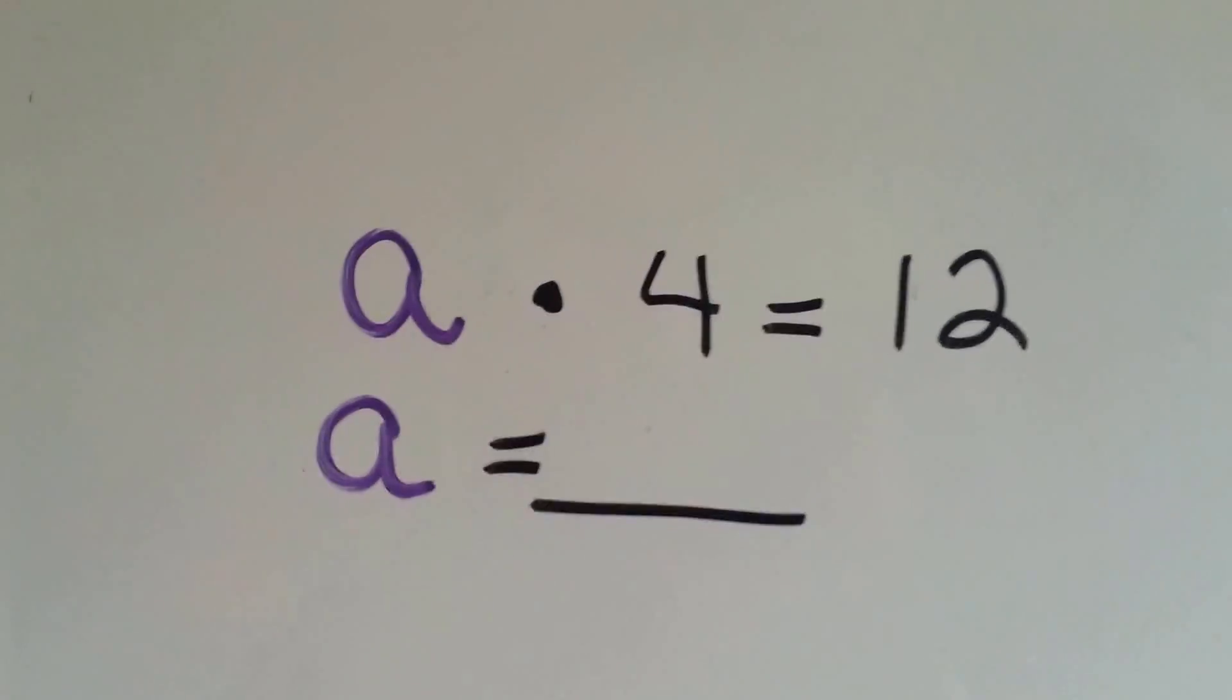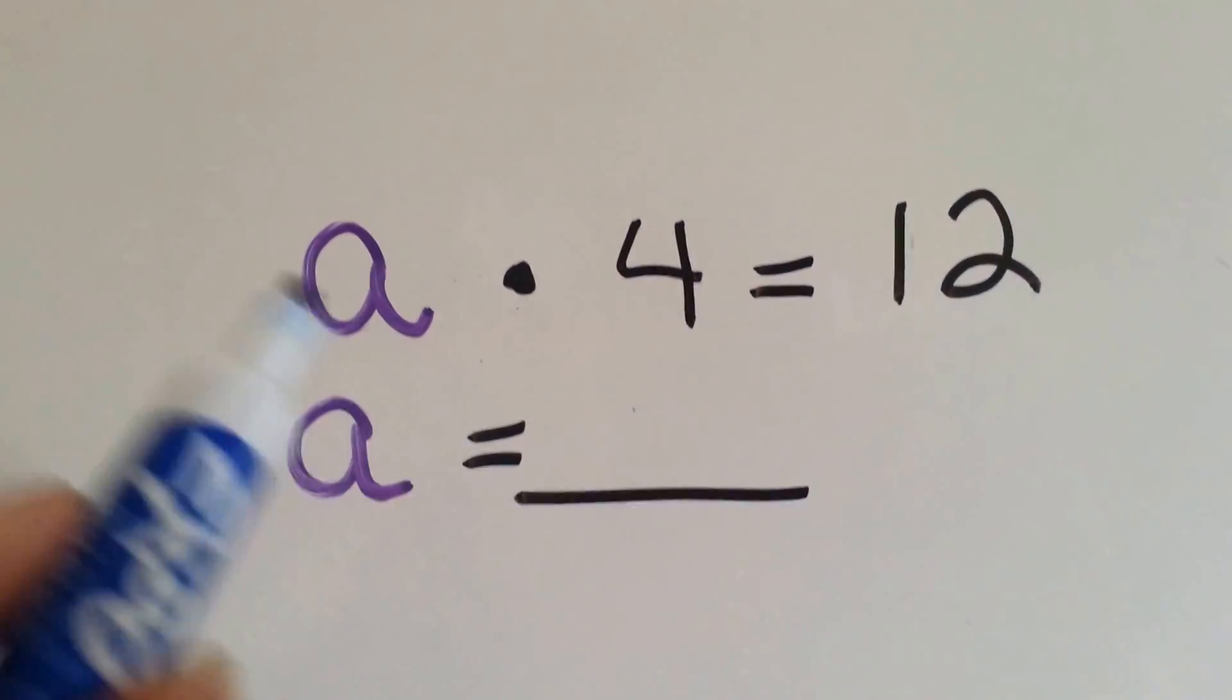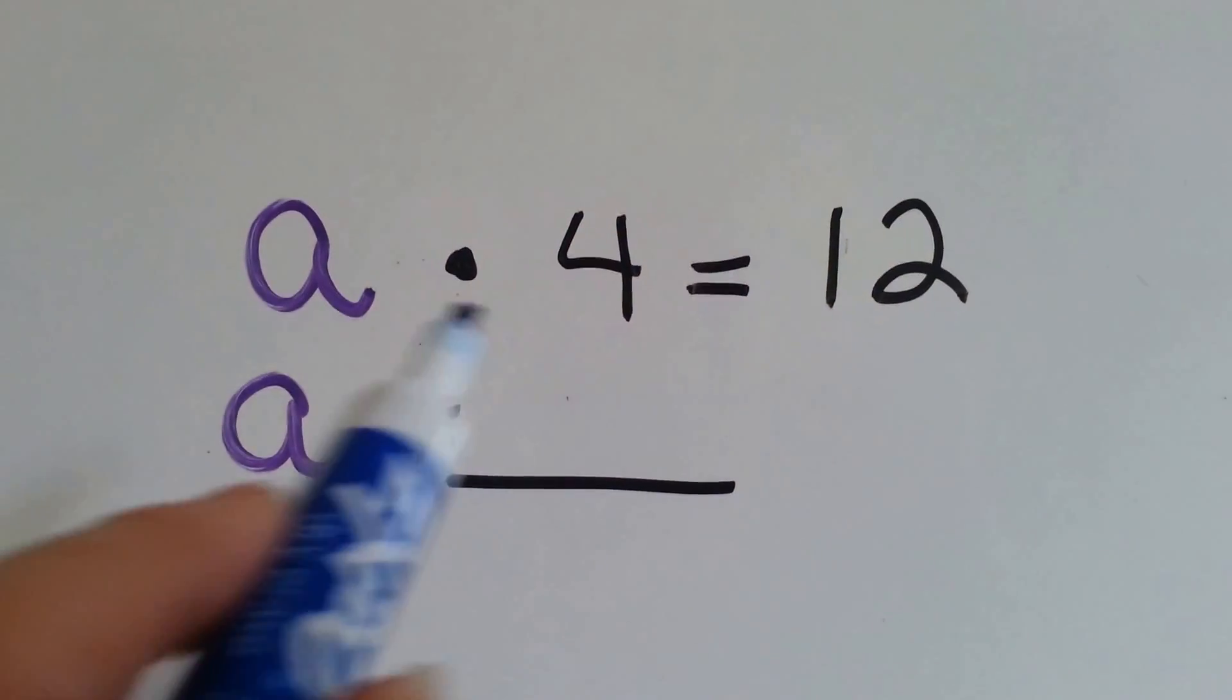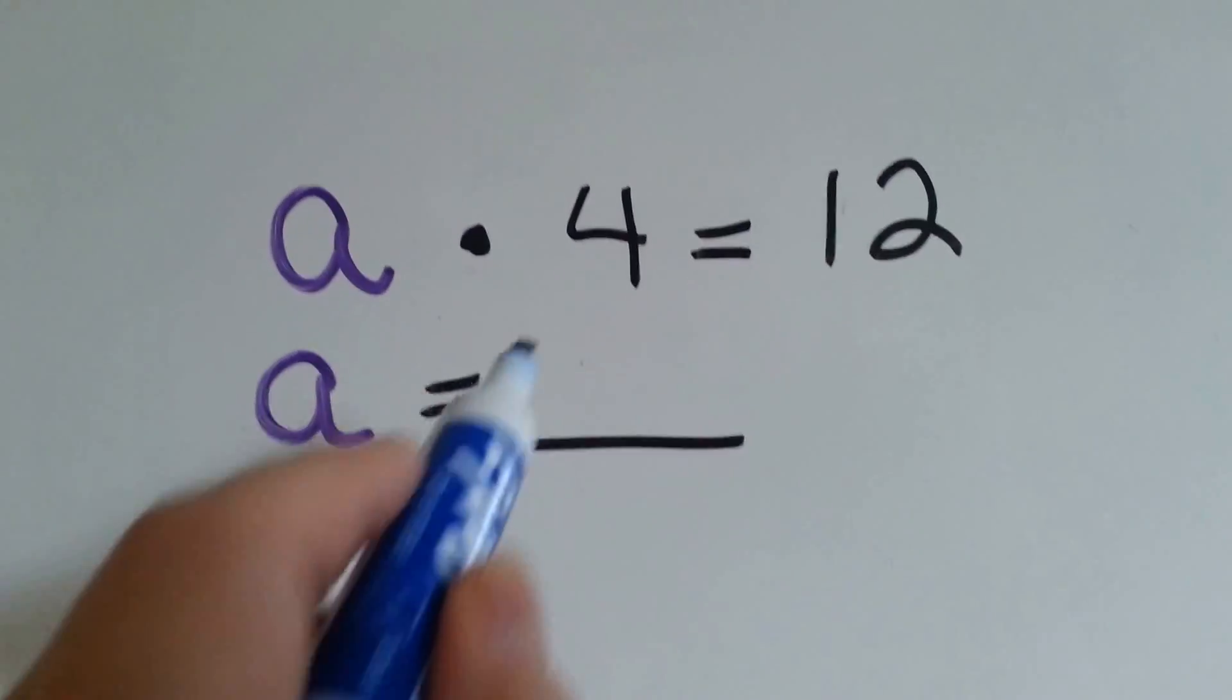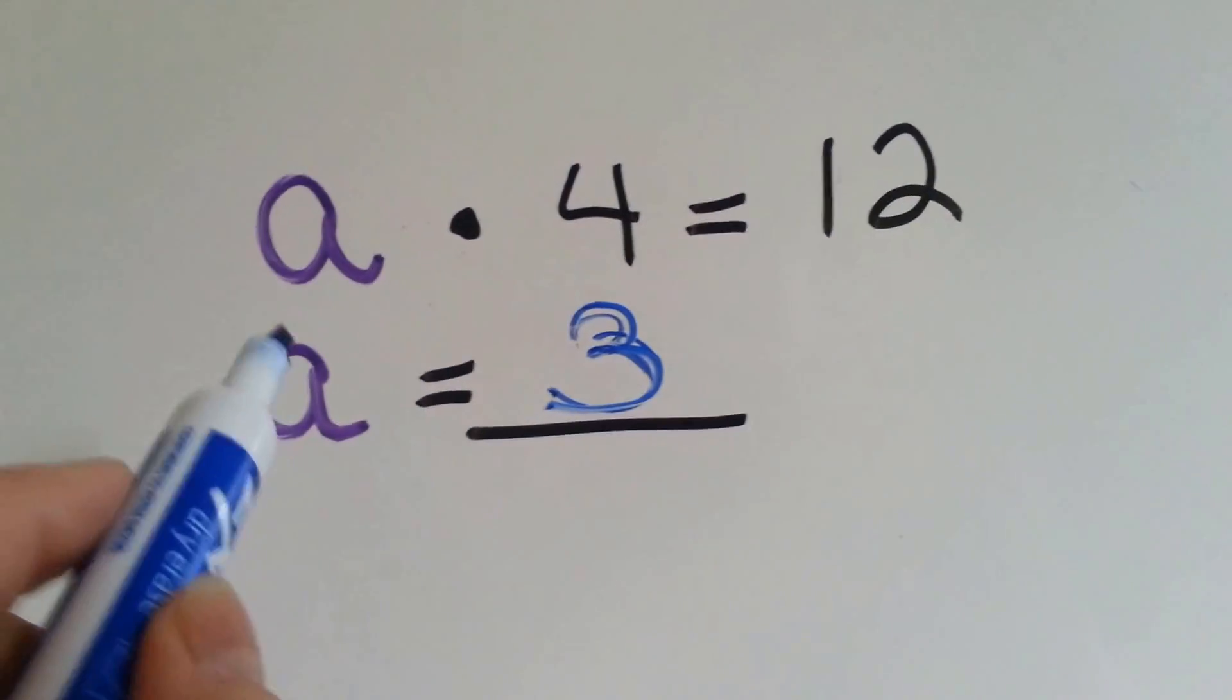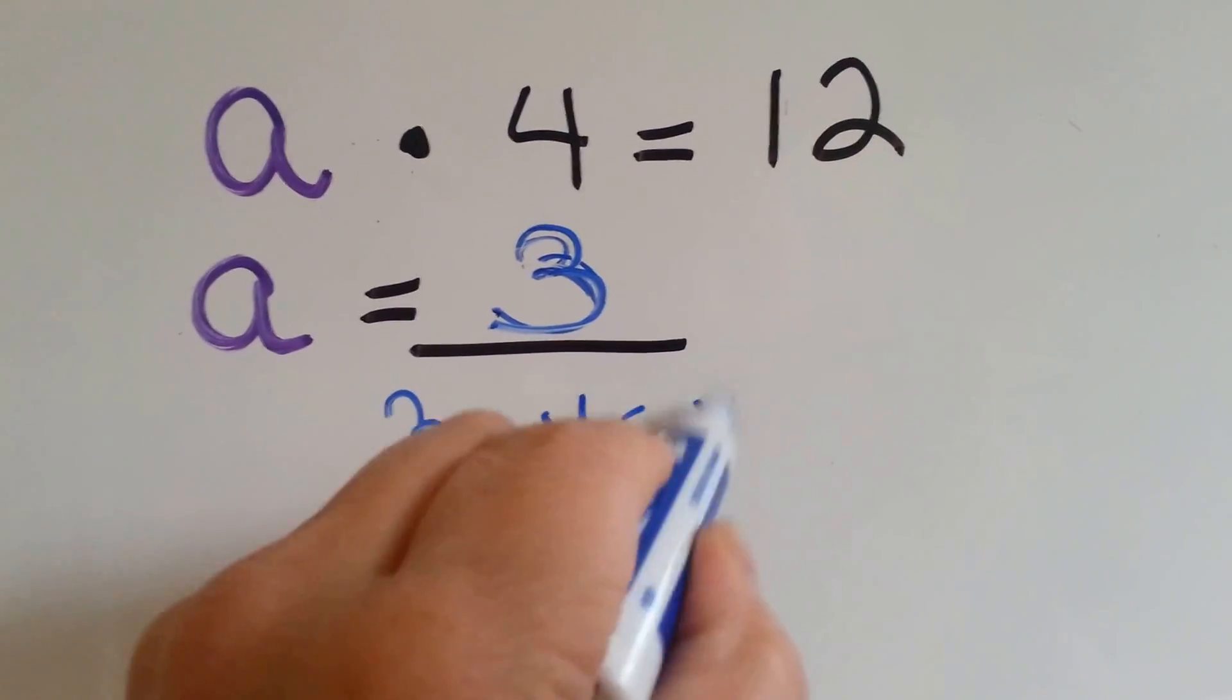Let's try another one. a times 4 equals 12. Something times 4 equals 12. Do you know your 4 times table? 3 times 4 equals 12. a is equal to 3. 3 times 4 equals 12.